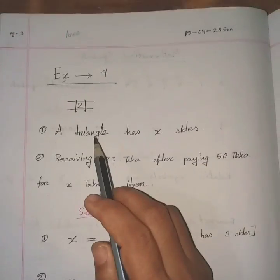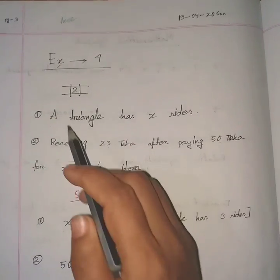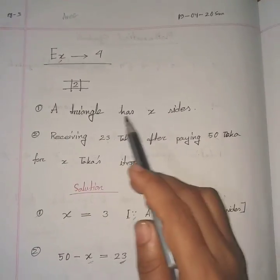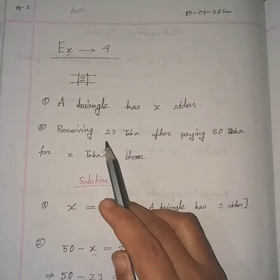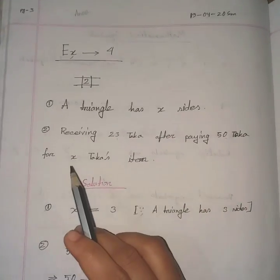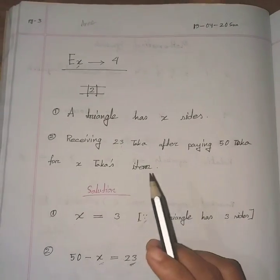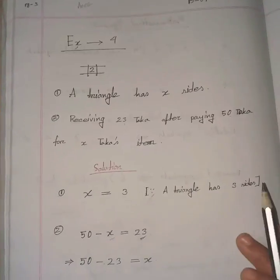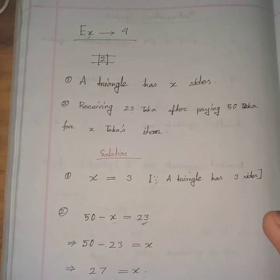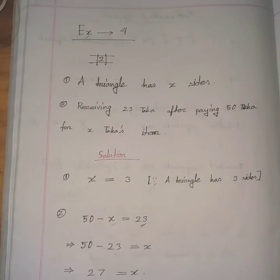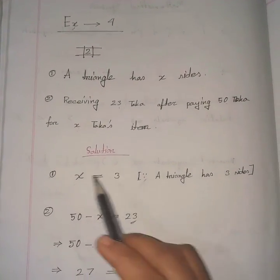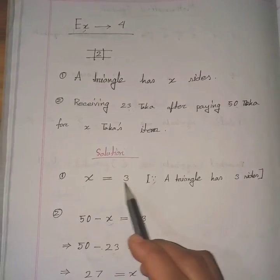Let us try to understand this problem. It has two parts. First: a triangle has x sides. We know that a triangle has three sides, so x = 3.